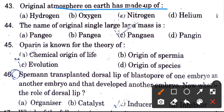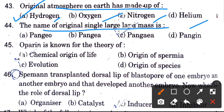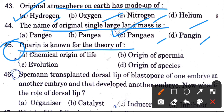Original atmosphere of Earth is made of — Earth's original atmosphere is made of hydrogen, oxygen, nitrogen, helium. The original atmosphere was made of hydrogen. The name of the original single large mass is called — options are Pangeo, Pangaea, Pangean. The answer is Pangaea.